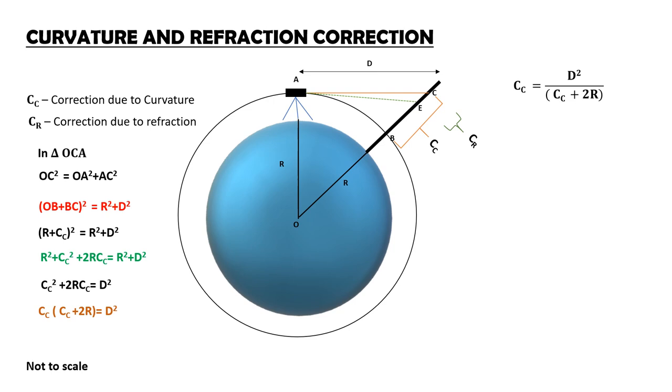Again, ignore CC on the right hand side denominator comparing to earth's radius. Hence, CC is equal to D square by 2R. As you know, mean radius of earth is 6370 kilometer approximately.